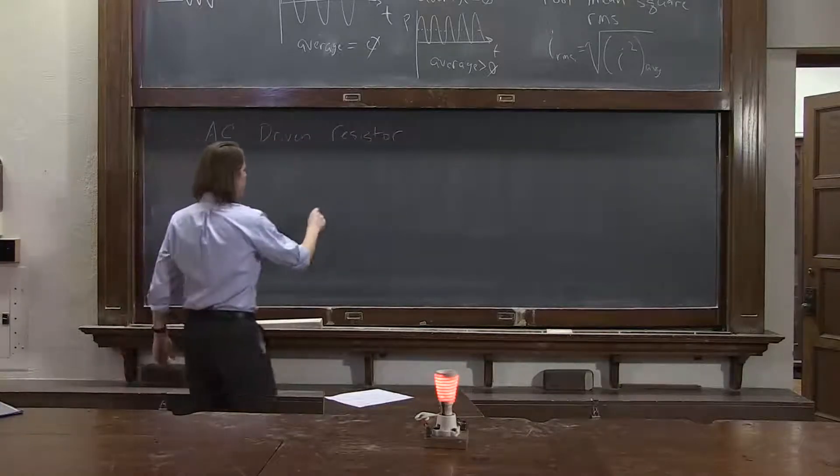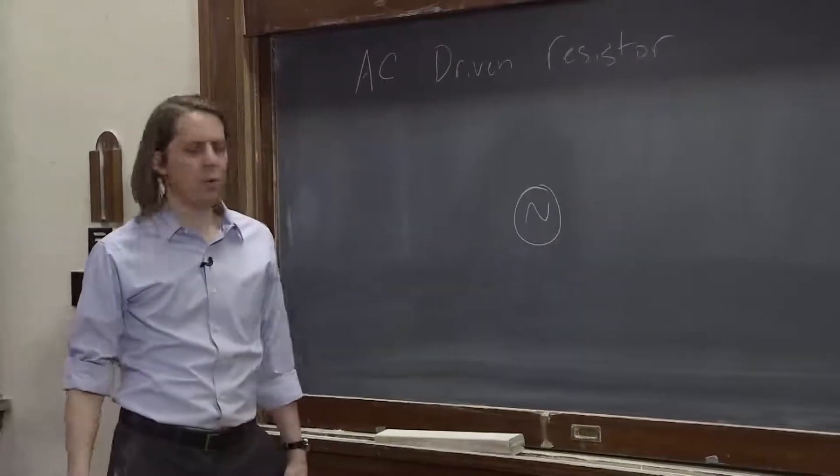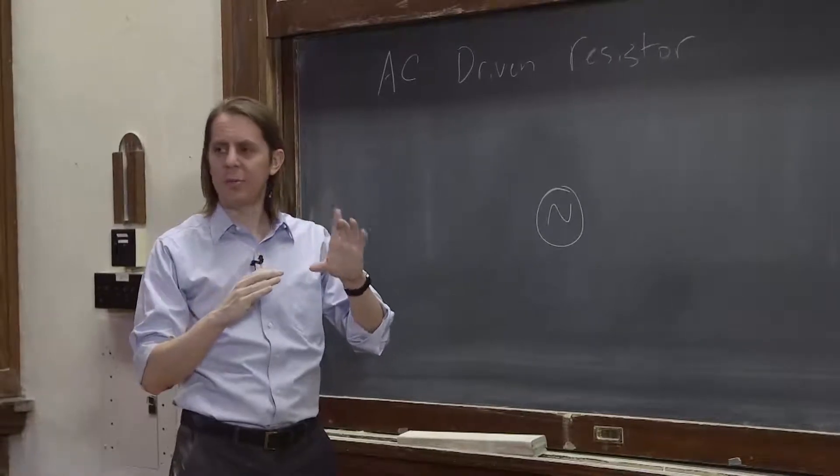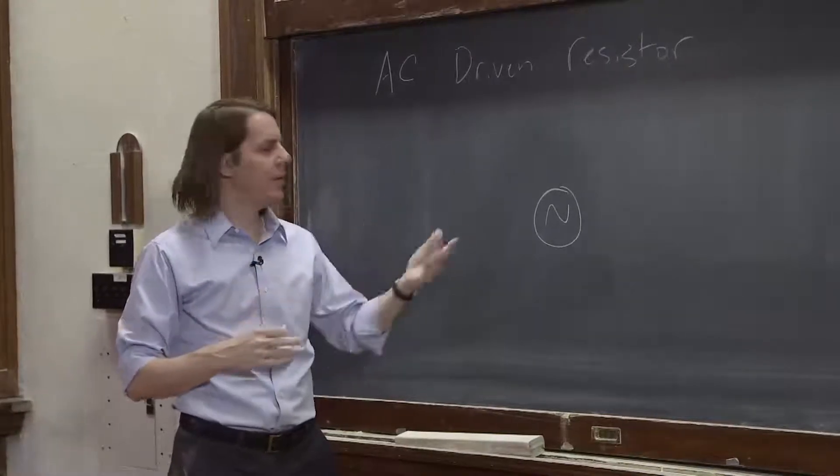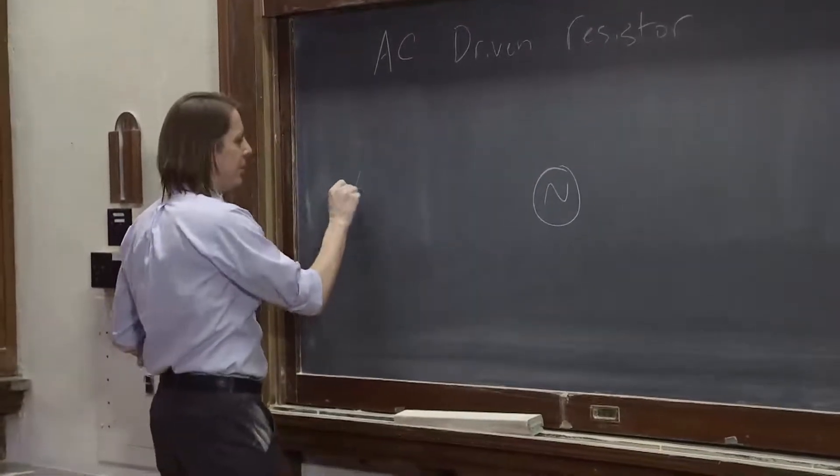We could draw it like this. We have a new thing, an AC power supply. So a battery applied a set potential difference, a constant potential difference between two points in a circuit. This just applies an oscillating potential difference between two points in a circuit.